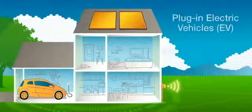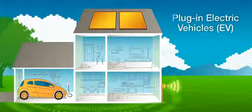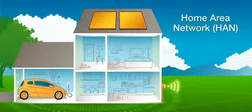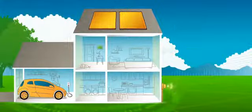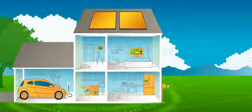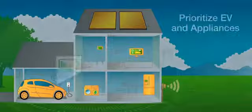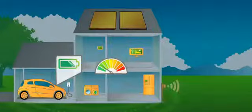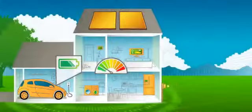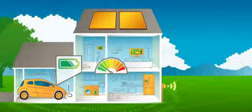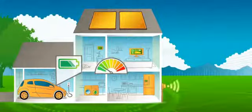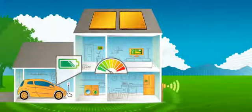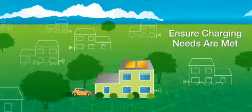The charging of a plug-in electric vehicle can be managed over a home area network or HAN. The HAN can balance the demand for electricity across the household and prioritize between the electric vehicle and other appliances to manage electricity usage and reduce costs. With smart grid technologies and consumer participation, utilities can more easily handle the increased demand for power to run the electric vehicles and ensure charging needs are met.